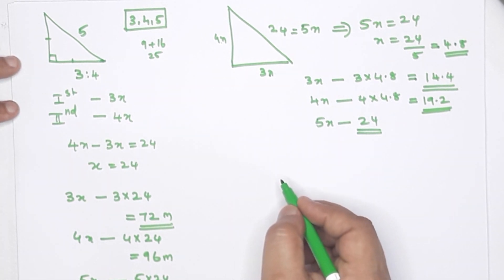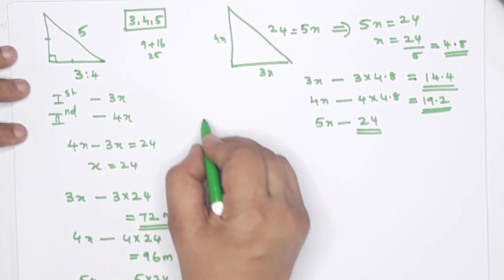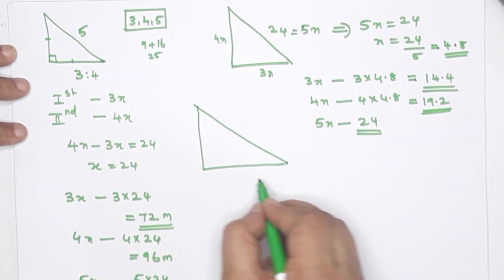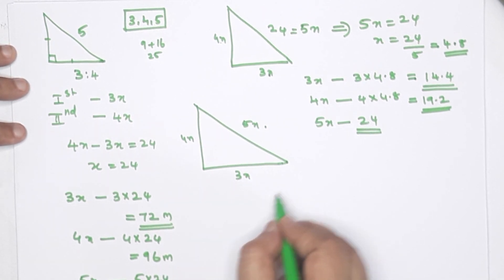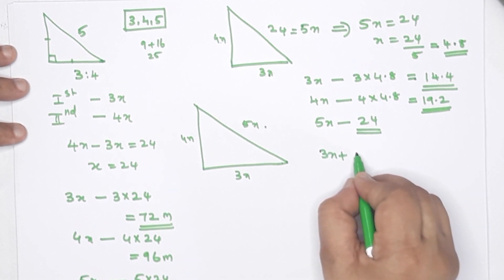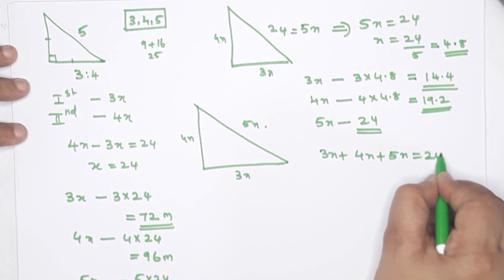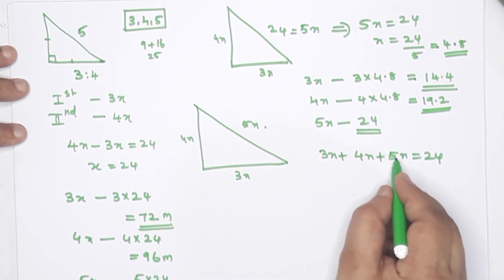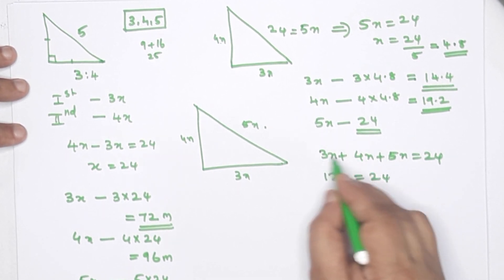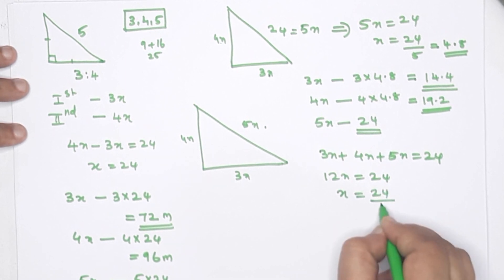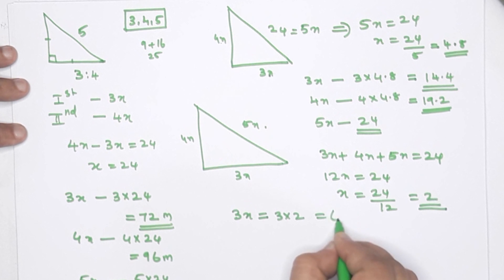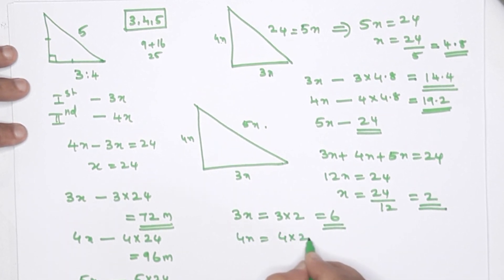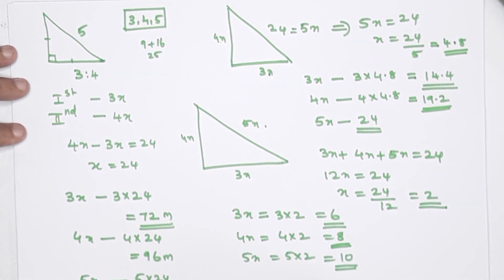Third question: the perimeter is 24 meters. Total perimeter is 3x plus 4x plus 5x equals 24, so 12x equals 24, and x equals 2. Therefore 3x equals 6, 4x equals 8, and 5x equals 10.